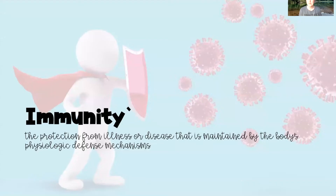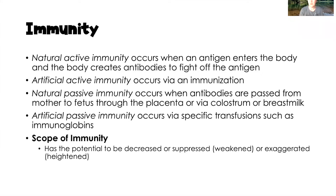Today's topic is immunity. Immunity is defined as the protection from illness or disease that is maintained by the body's physiologic defense mechanisms. There are four types of immunity. The first is natural active immunity — this is when we actually acquire a disease, like the flu, so the antigen enters our body and our body creates antibodies to fight it off. Artificial active immunity is when we get a flu immunization.